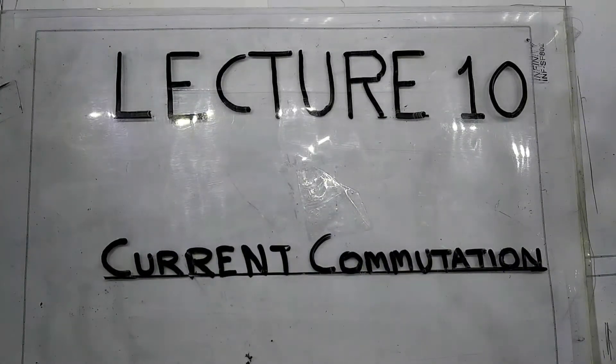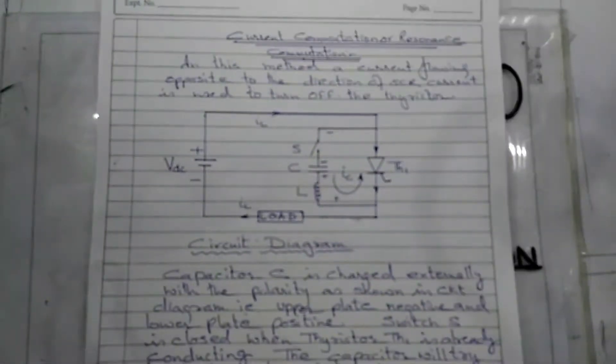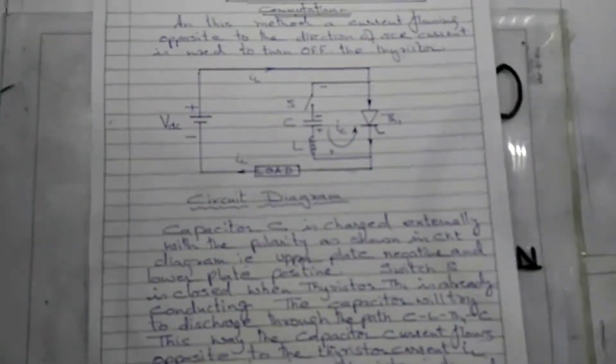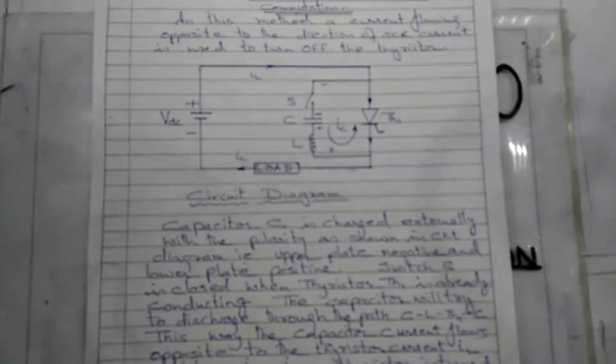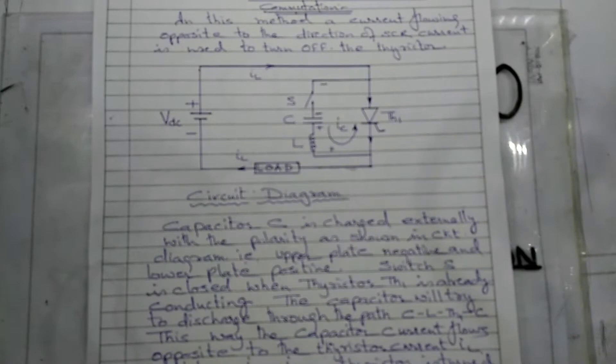We can see the circuit diagram of current commutation, or this is also called resonance commutation.